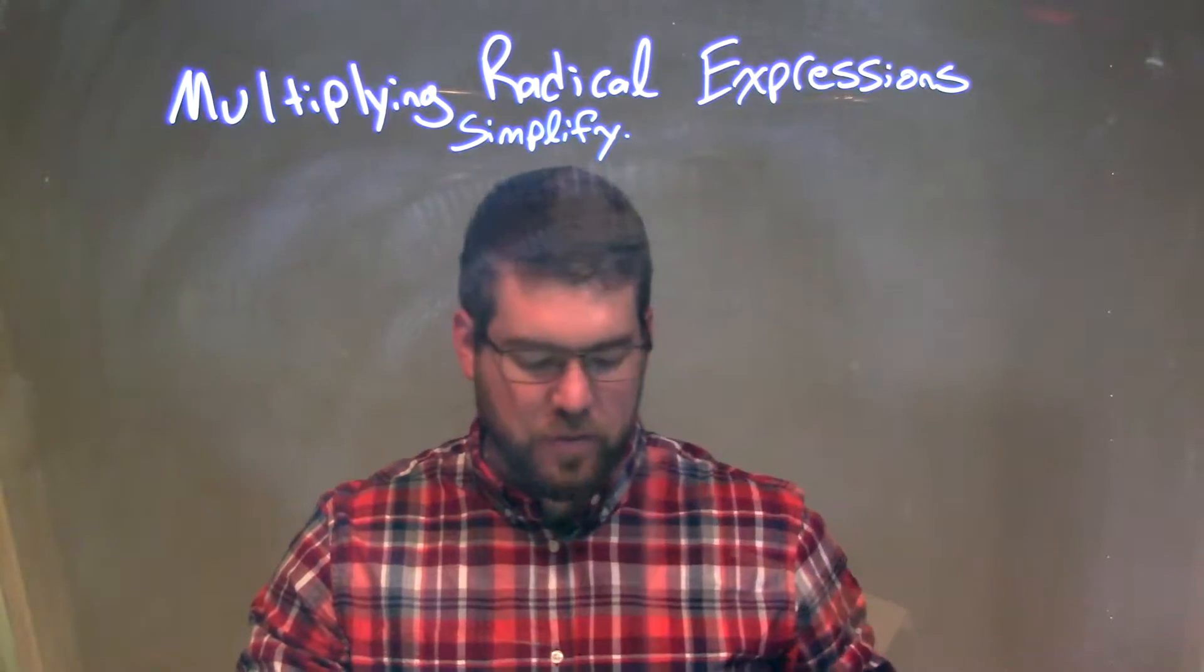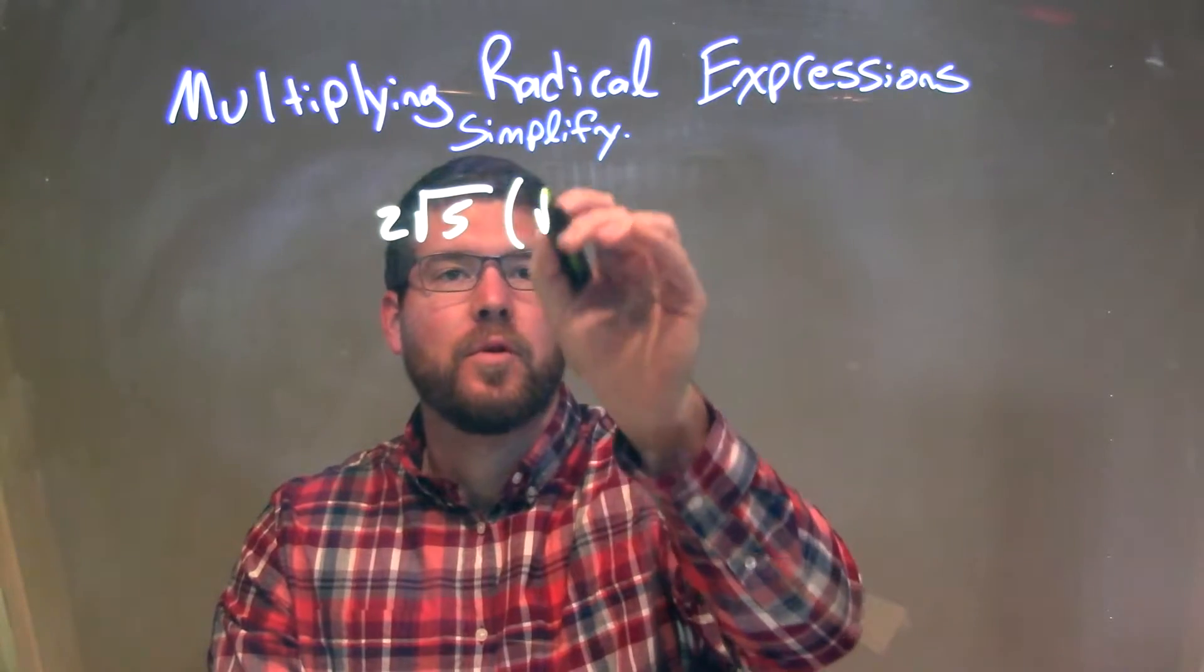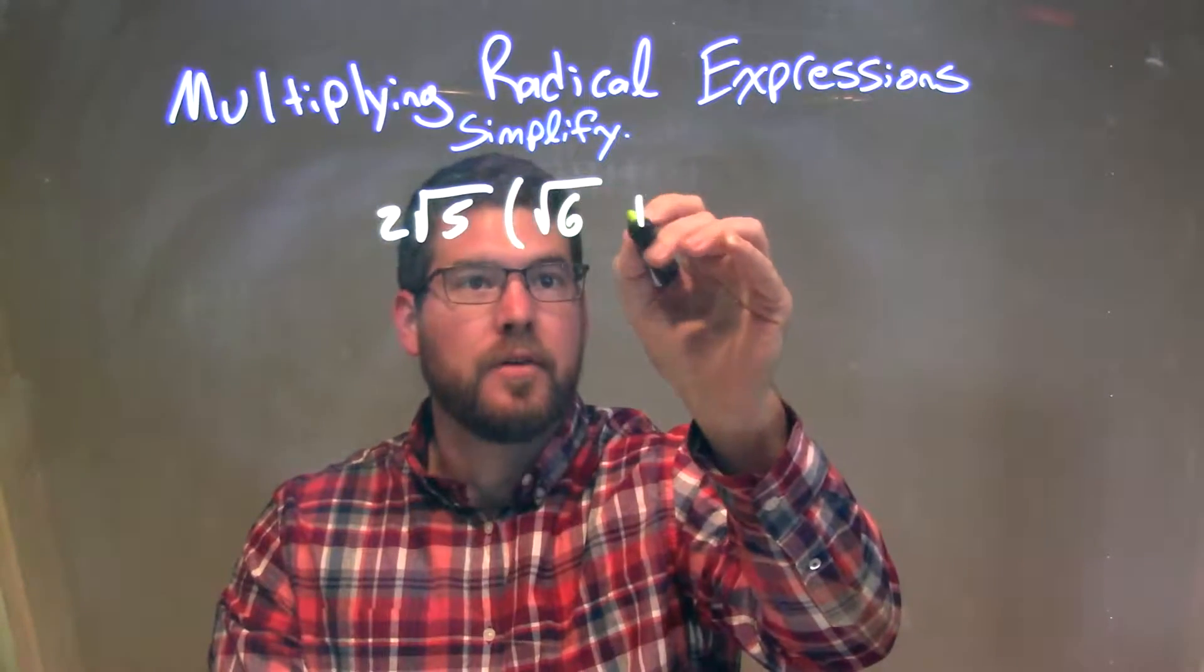So if I had to simplify this expression, 2 times the square root of 5 times the parentheses, the square root of 6, plus 2.